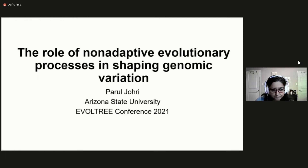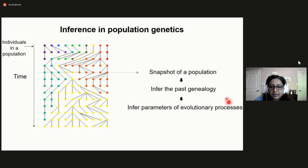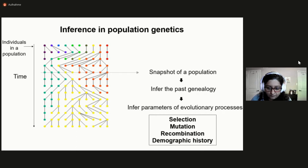Inference in population genetics is largely performed by taking a snapshot of a natural population at any point in time. Using genome-wide sequence variation between individuals allows us to infer the past genealogy and parameters of evolutionary processes that have acted on this population, like selection, mutation, recombination, and genetic drift specific to the demographic history of this population.